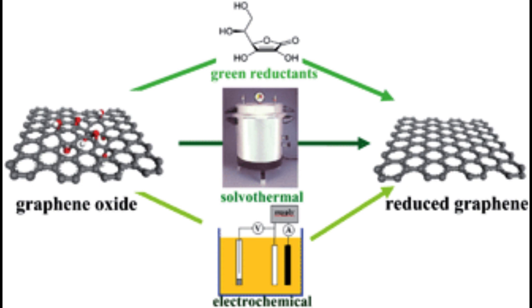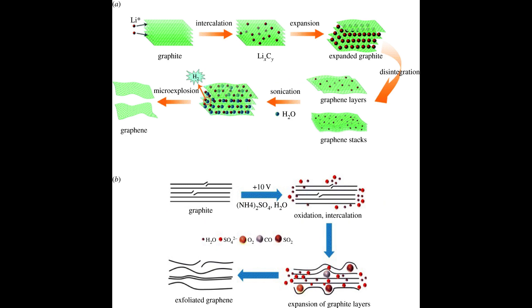Hydrothermal synthesis. This method involves reacting graphite oxide or other precursors in a high-temperature, high-pressure water or aqueous solution environment. It can produce graphene or graphene-like materials in the form of thin films or powders.